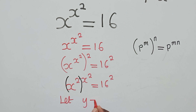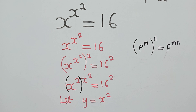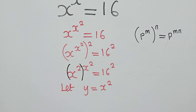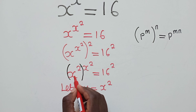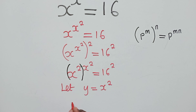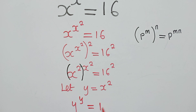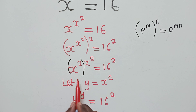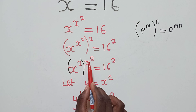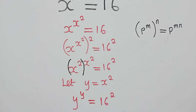The next step is to let y be equal to x squared. So y = x², meaning we substitute y right here and here. We get y to the power y is equal to 16 power 2. So we are now at the point: y^y = 16².